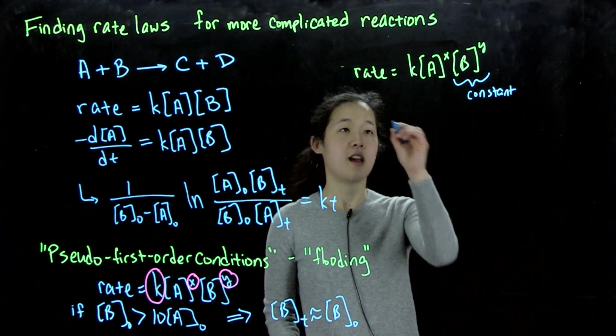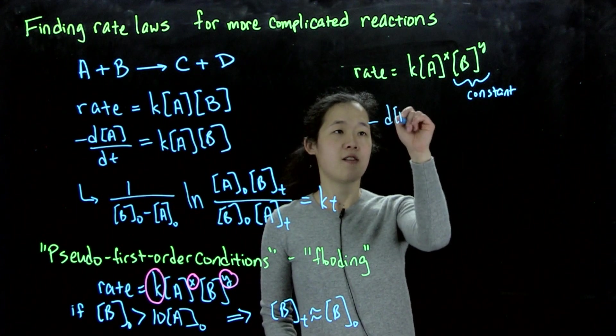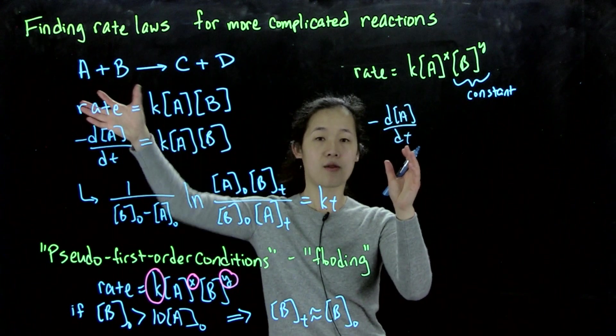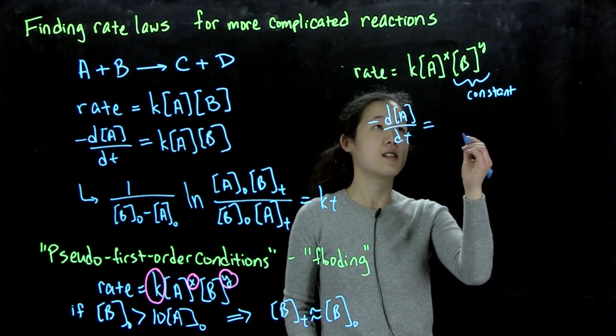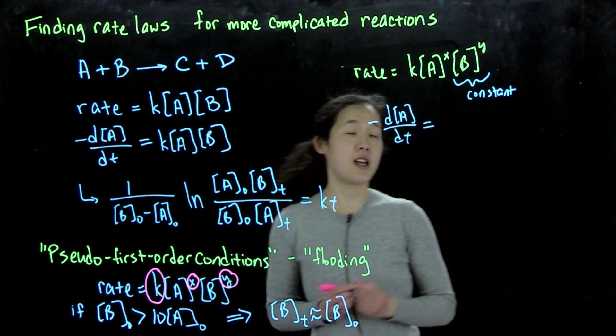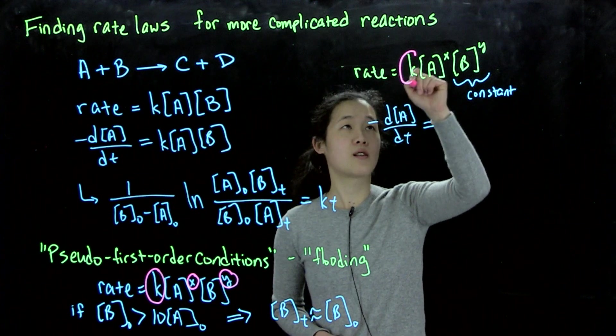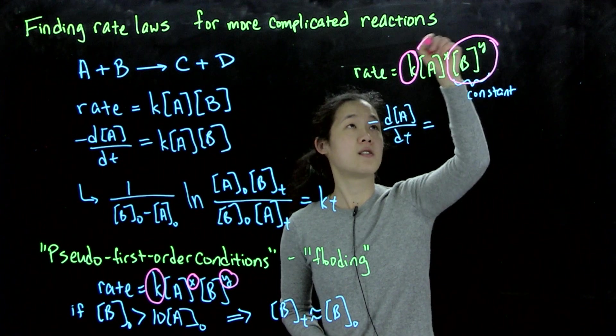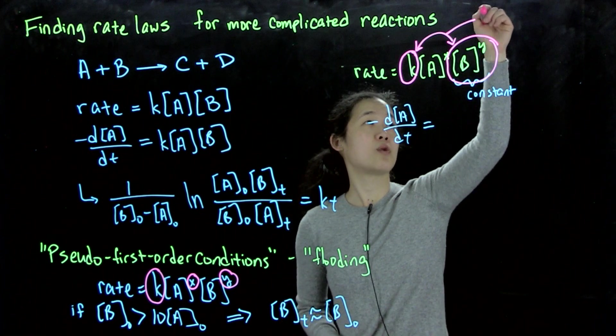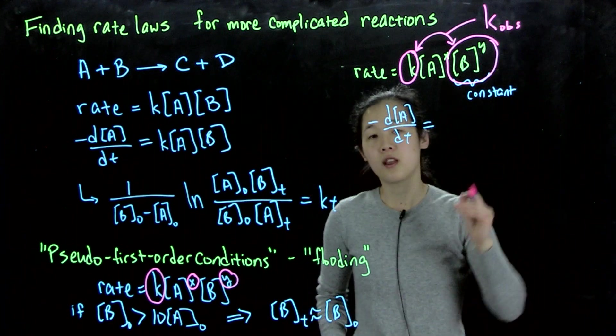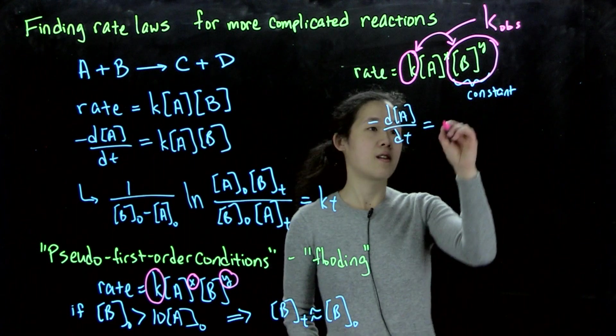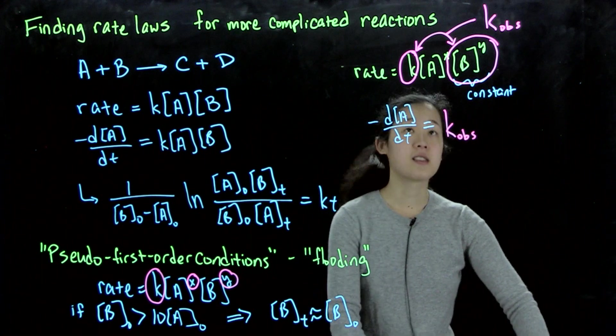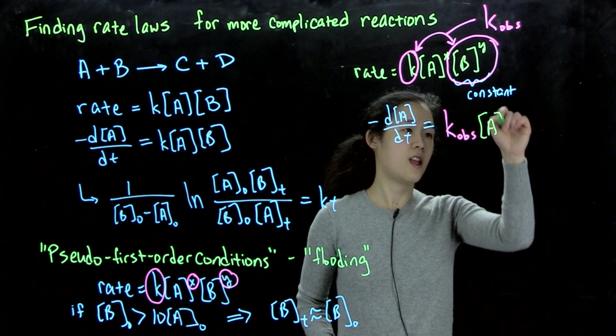And then now dA/dt, or negative dA/dt for this reaction that we're writing here, is going to be equal to a new constant. So what we're going to do is we are going to combine our original rate constant, the real rate constant, with this expression, which will be approximately constant. So together, this will be a new constant, which we'll call k_obs, the observed rate constant. So this will give us a new constant, and then this will be then times A to the x.